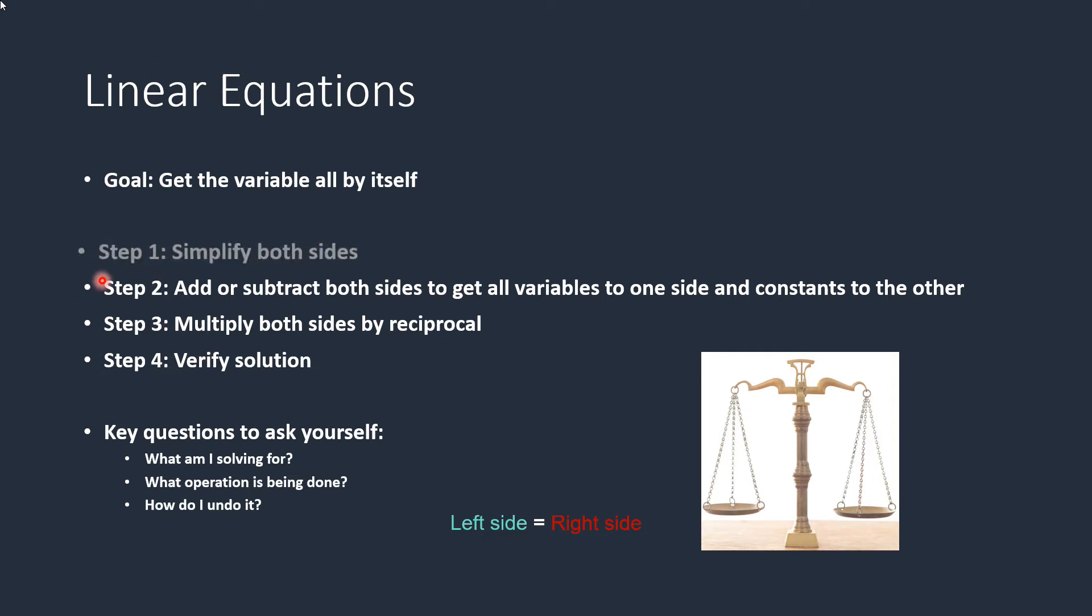So step one is to simplify both sides. Step two is to add or subtract both sides to get the variables to one side and your constants to the other side. Then step three is you want to multiply both sides by the reciprocal. You can also divide off the coefficients. And then step number four is to verify. That means to plug your solution back in.